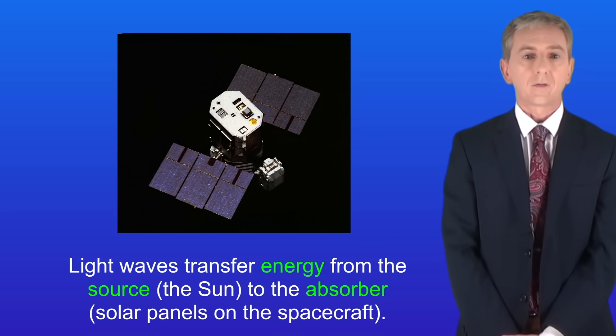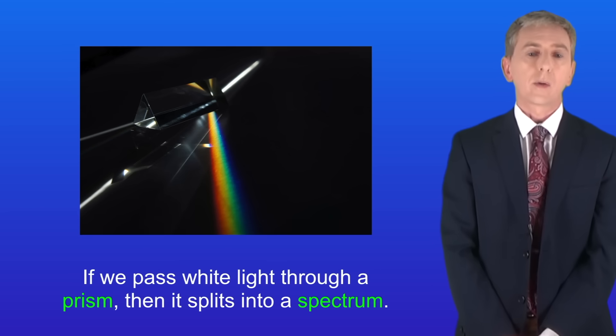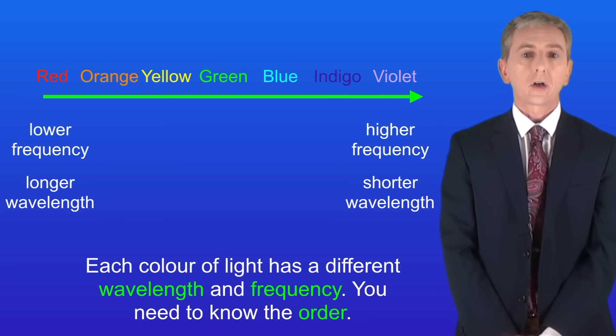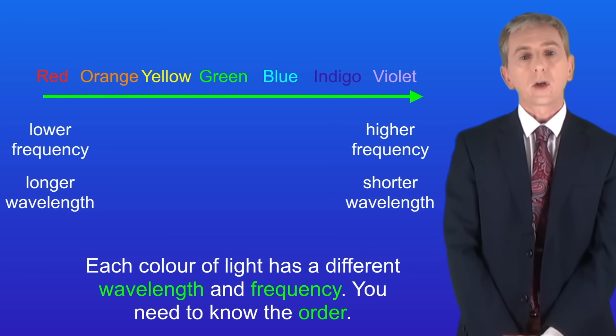So as we've seen, visible light is an example of an electromagnetic wave. If we pass white light through a prism then it splits into a spectrum like this. Each colour of light has a different wavelength and frequency. And you need to know the order.